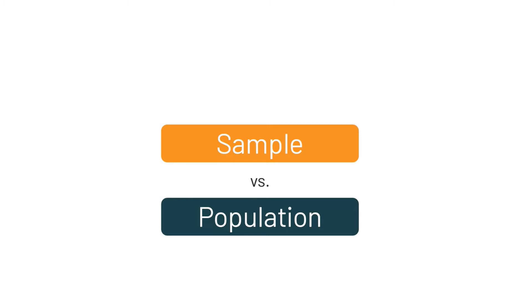Now there is another kind of classification of data - that is population and sample. Population basically indicates the entire group of something, and sample is nothing but a subset of the entire group.